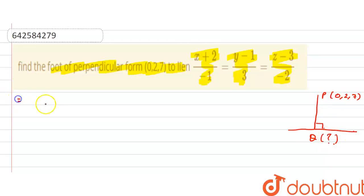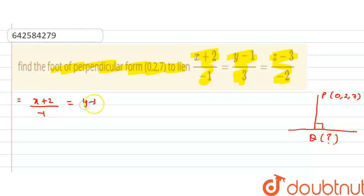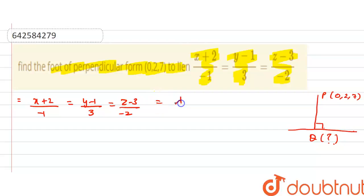Our Cartesian equation is: x plus 2 divided by minus 1 equals y minus 1 divided by 3 equals z minus 3 divided by minus 2. We set this equal to lambda.